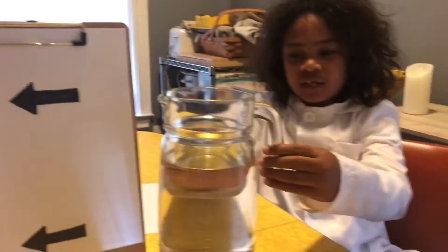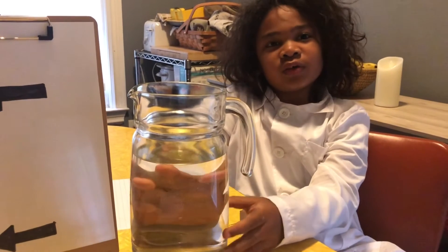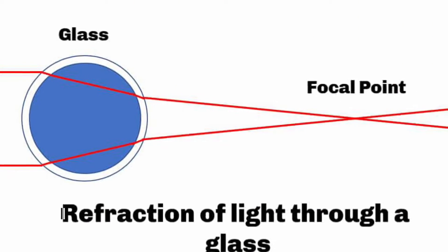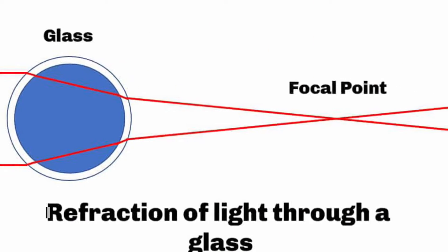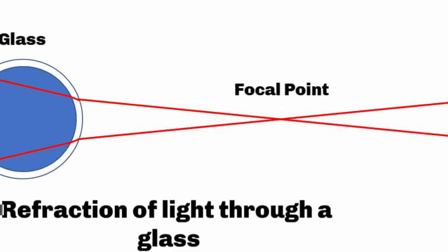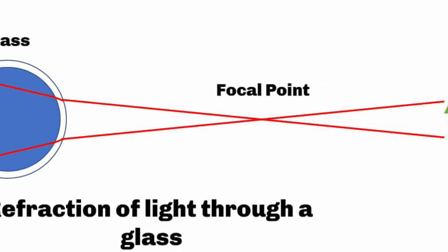Thanks scholars! Today we are gonna learn about the refraction of light. All you need is a picture and a glass of water. Refraction is the bending of light waves as they pass through different items that are transparent or see-through.